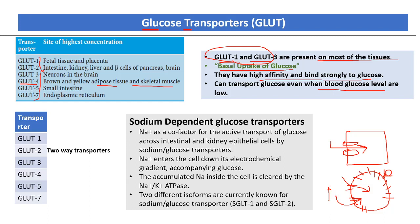GLUT2 transporters are bidirectional — the same transporting protein can let glucose both into and out of the cell. For example, hepatocytes take up glucose when levels are high and store it as glycogen, then break down glycogen and release glucose back into the bloodstream when levels are low. GLUT5 is present for transporting fructose, and GLUT7 is present on the endoplasmic reticulum.